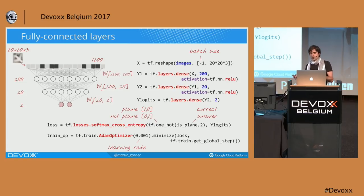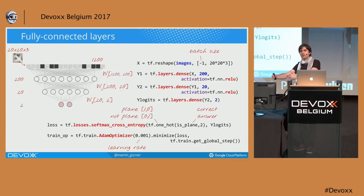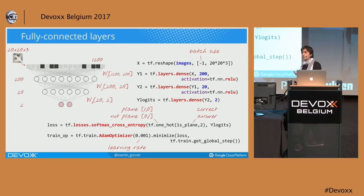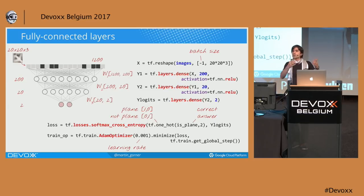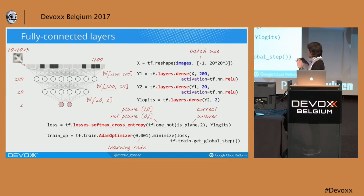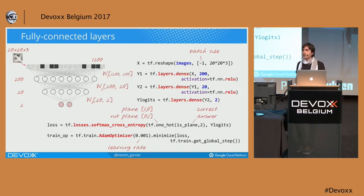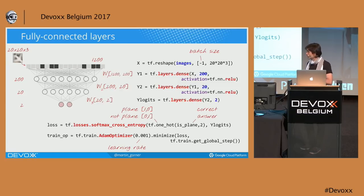TensorFlow will be predicting — initially badly. You put an image in and it gives you a prediction for this tile being a plane or not a plane. What you have to provide is a distance function between what was predicted and what you know to be true, because when training you put in known images so you know if it was a plane or not. This is a classification problem, so the handbook says: on the last layer use an activation function called softmax and a distance called cross-entropy.